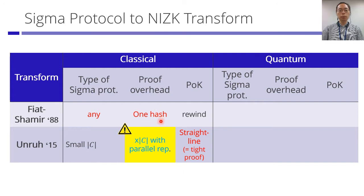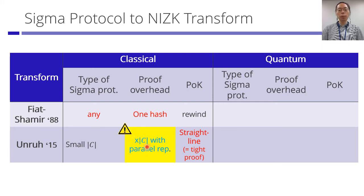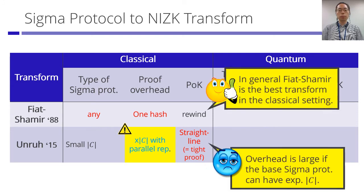There are two famous ways to convert a sigma protocol into an NIZK. The first is the Fiat-Shamir transform: in the classical setting it works for any sigma protocol with minimal proof overhead, though proof of knowledge requires rewinding and incurs a reduction loss. The second is the Unruh transform, originally created for the quantum setting but also works classically. It works for any sigma protocol but requires restricting the challenge set to be small, which necessitates many parallel repetitions and introduces large garbage terms, causing significant proof size blowup. The advantage is that proof of knowledge is straight-line extractable, resulting in a tighter proof without rewinding.